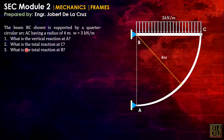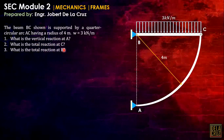Beam BC is supported by a quarter circular arc AC having a radius of 4 meters, with a uniformly distributed load on top. We need to find: the vertical reaction at A, the total reaction at C, and the total reaction at B.